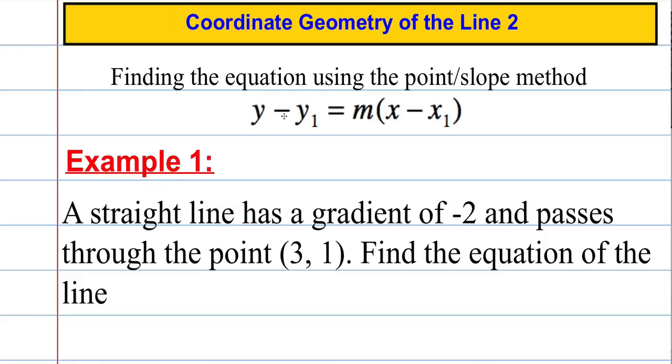I'm not going to talk about where this formula comes from or derive it. If you want to look it up, check it out on the internet. Let's just focus on how we might use it. So we have a straight line with a gradient of negative 2 that passes through the point 3, 1. We're asked to find the equation of the line.